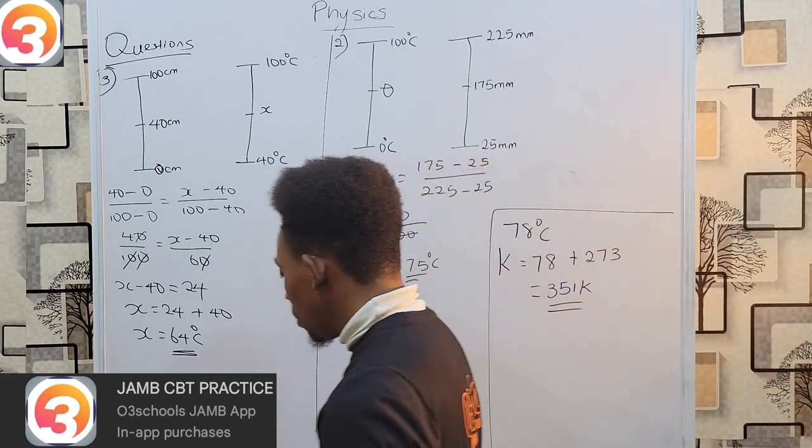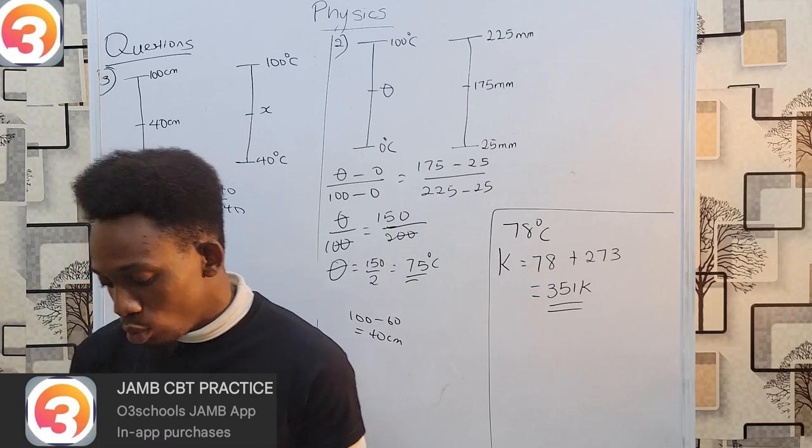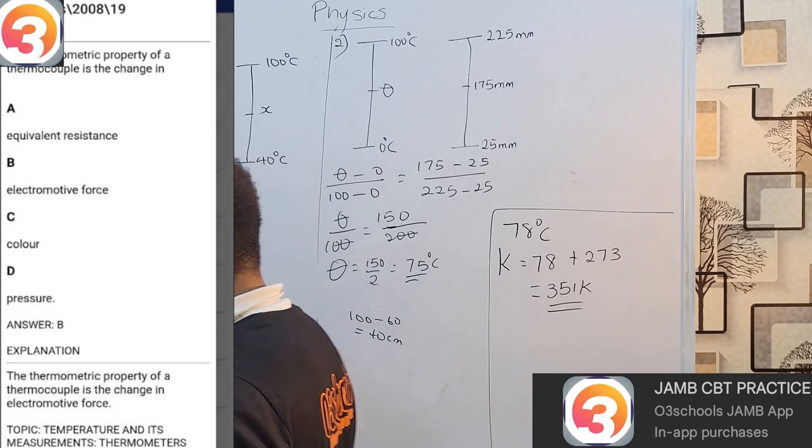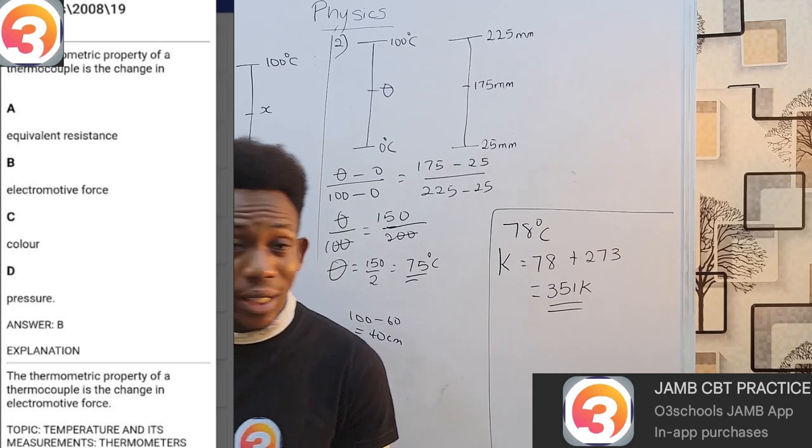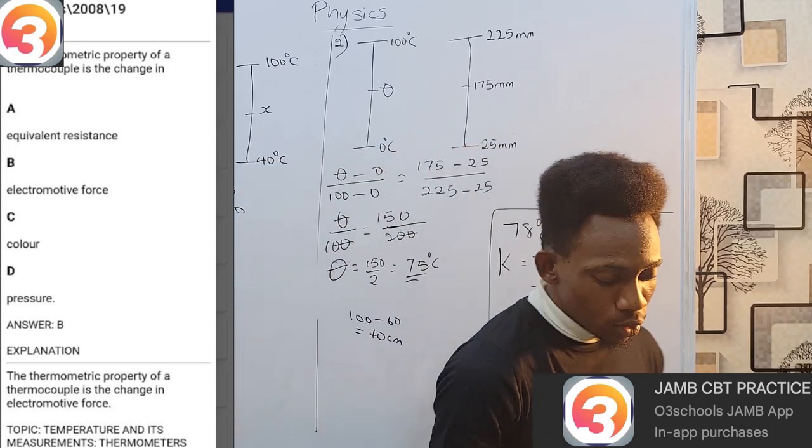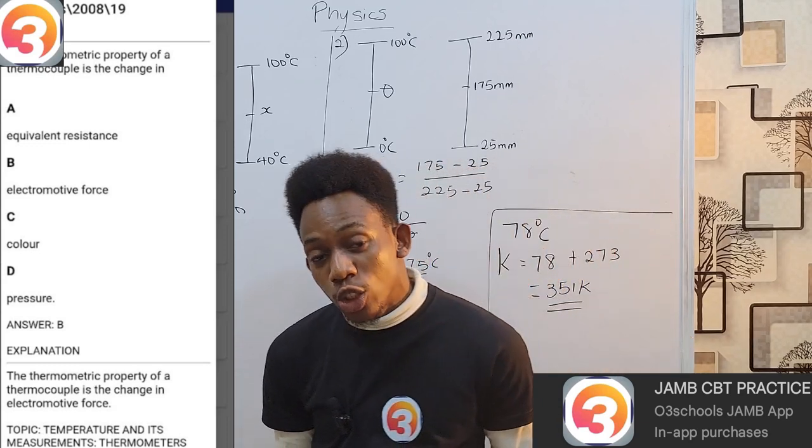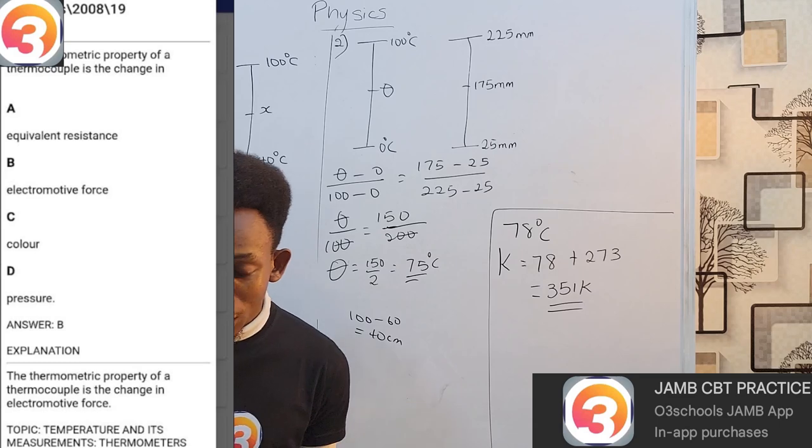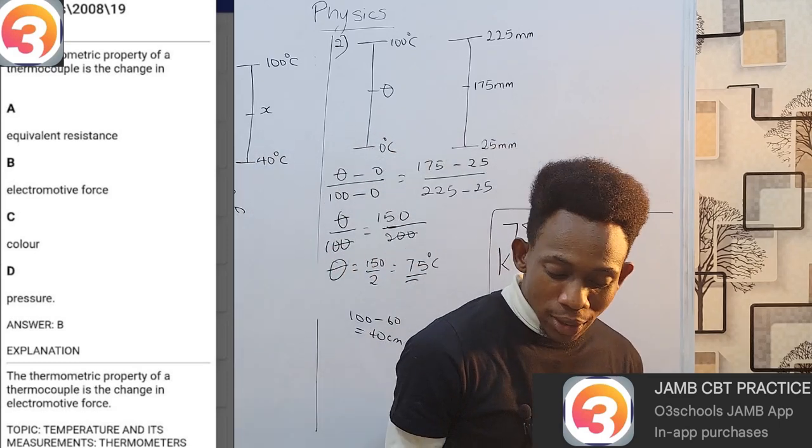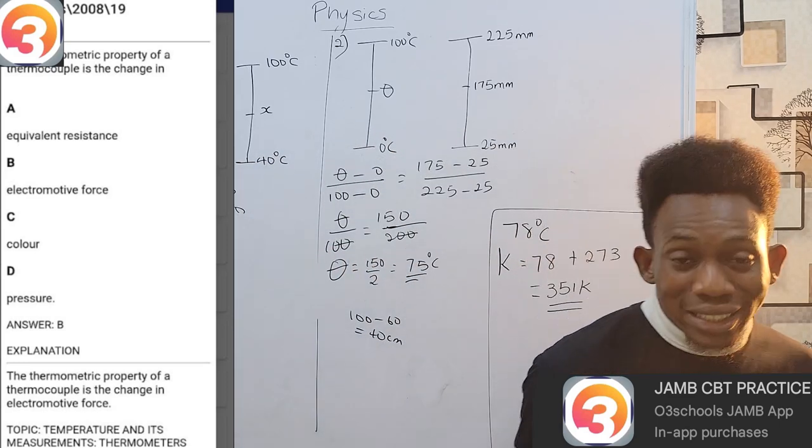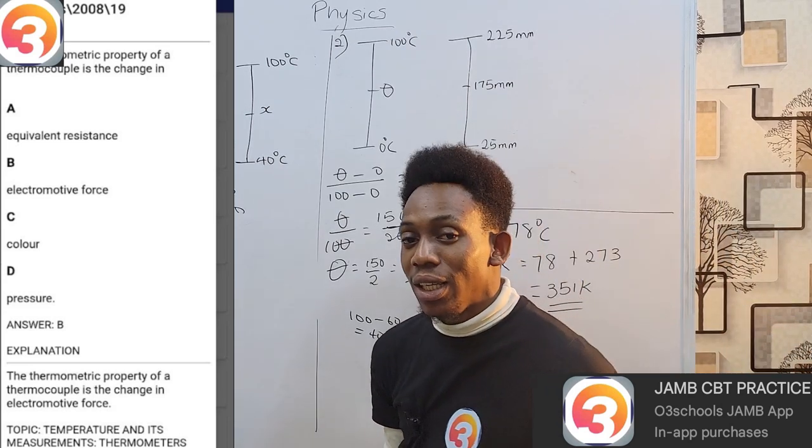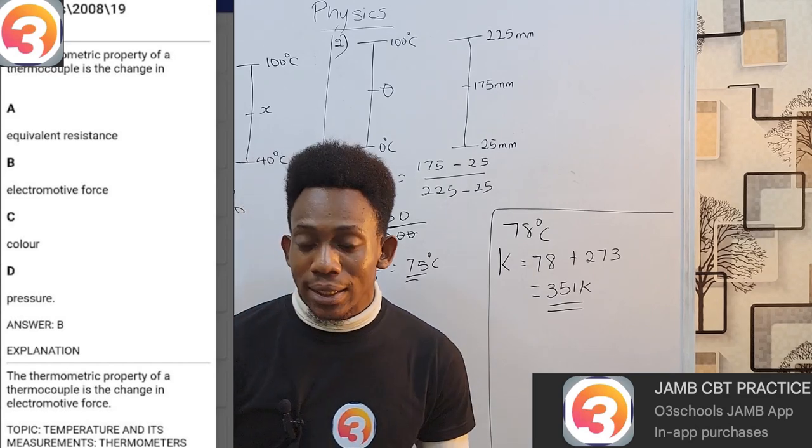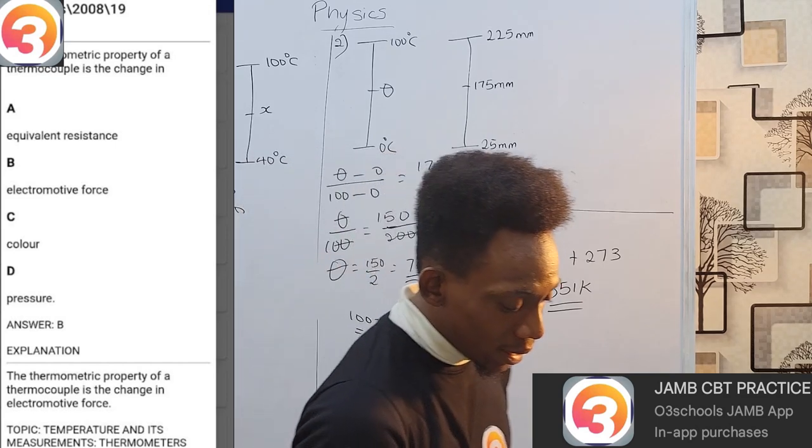We also have the thermometric property of a thermocouple is the change in what? We looked at this at the beginning of the class. Change in what for thermocouple? Prevalent resistance, we said no. Resistance is for the resistance thermometer, obviously. Electromotive force, yes, that is my answer. We should also analyze the other options. Color works for your optical pyrometer, while pressure is for your gas thermometer. So my answer is electromotive force option B. This was from 2008, question number 19.